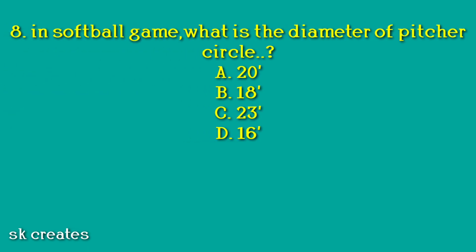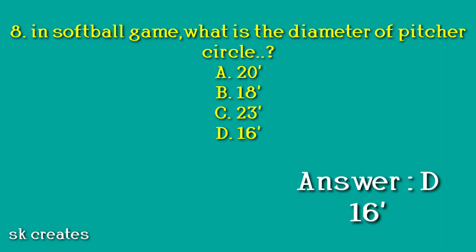Question number 8: In softball, what is the diameter of the pitcher circle? Option A. 20 feet. Option B. 18 feet. Option C. 23 feet. Option D. 16 feet. Answer: D. 16 feet.